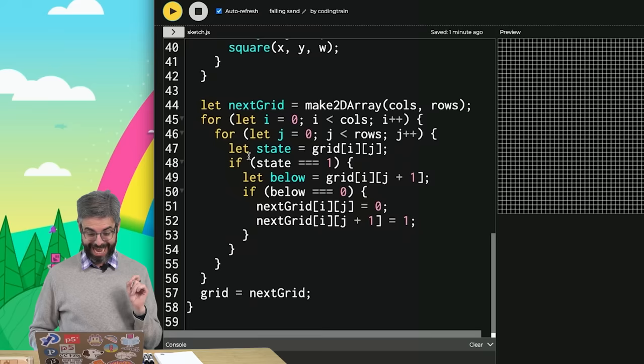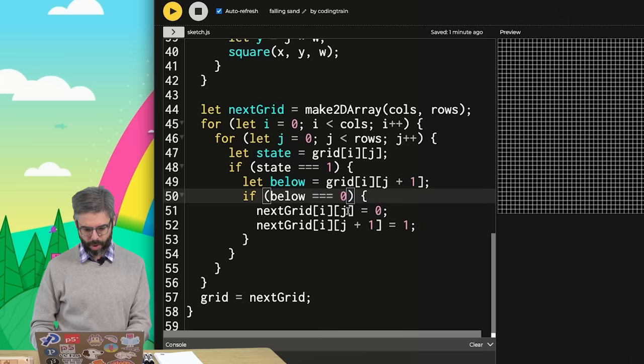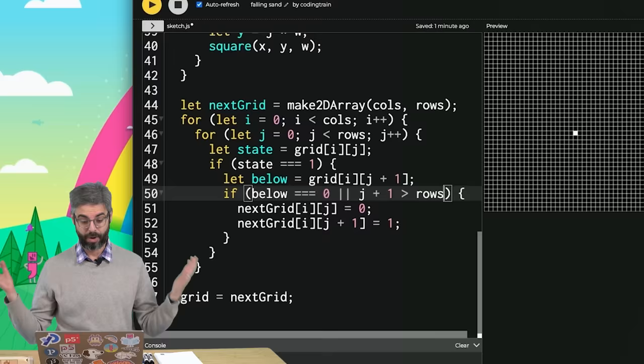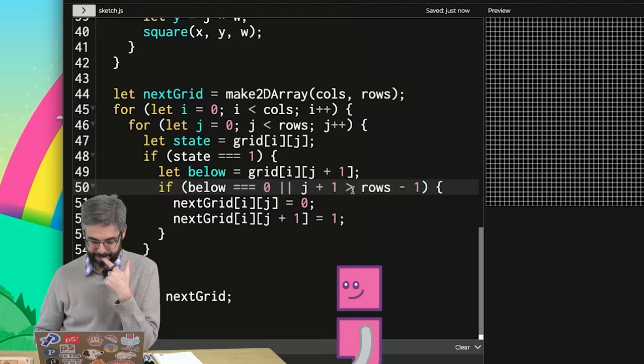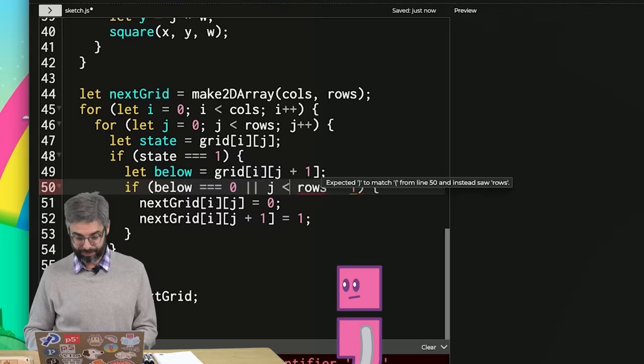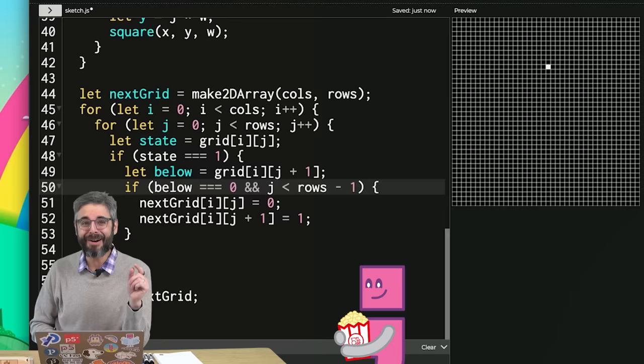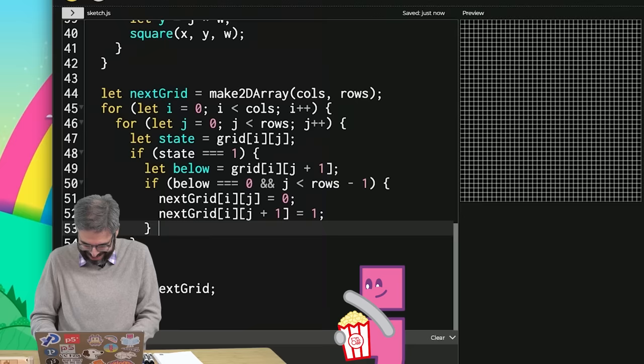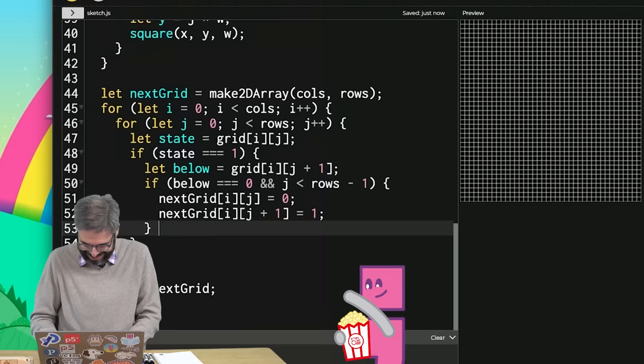So I need to account for the edge. If below equals zero or if j plus one is greater than the number of rows. If j plus one is greater than the number of rows minus one. Oh, or. No, less than. If below is zero and j is not the bottom row. I have an or there and I said and. If below is less zero. Why am I getting this wrong so many times? Oh, otherwise it needs to stay as one. I might have had it right all those times. Otherwise, next grid i j should stay as one. And in fact, if everything is going to be set initially to zero, I don't have to explicitly set it to zero. So I'm basically deciding if I should move it down or leave it where it is.